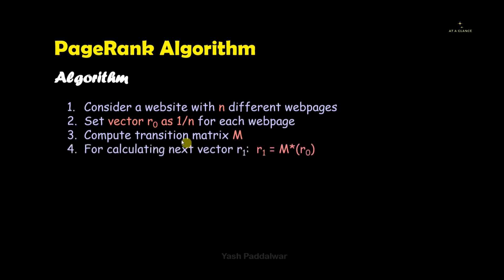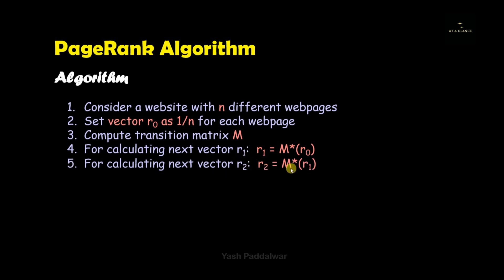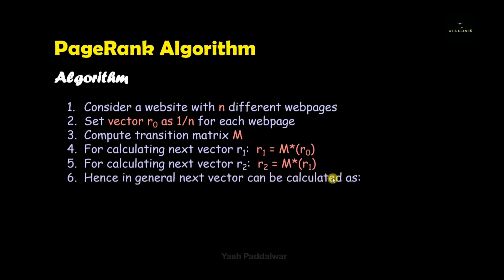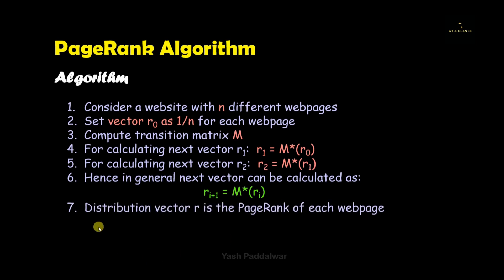Once we compute the transition matrix, we need to continuously find the next vectors. We have constructed the initial vector r0. Using r0, we find the next vector r1: the formula is r1 = M × r0. Similarly, r2 = M × r1. In general, r(i+1) = M × r(i). We need to continuously find the next vector as per the number of iterations specified in the problem.